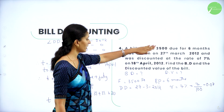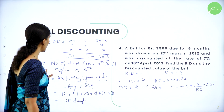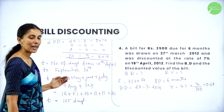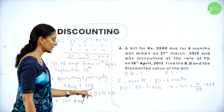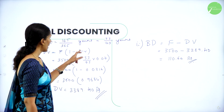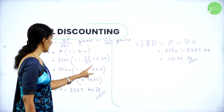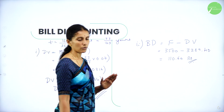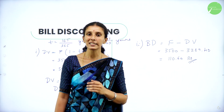In this question, face value and bill period were given, so we calculated the legally due date. From 18th April to 30th September is 165 days, converting to 33 by 73 years. Rate of interest is 0.07. Multiplying and subtracting gives the factor 0.9684, and multiplying by 3500 gives the discounted value. Banker's discount is the difference between face value and discounted value, equal to Rs. 110.60.